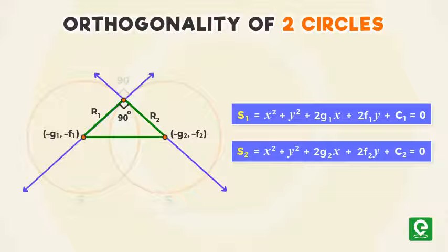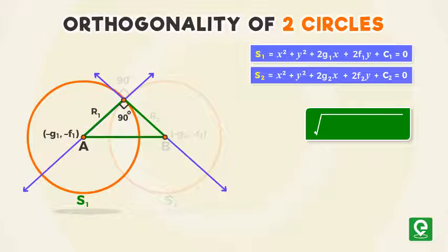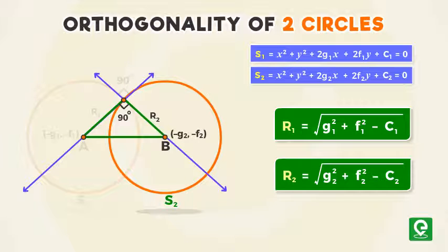Where (-g₁, -f₁) and (-g₂, -f₂) are the respective centers A and B of the circles S₁ and S₂. Also √(g₁² + f₁² - c₁) = r₁ is the radius of circle S₁ and √(g₂² + f₂² - c₂) = r₂ is the radius of circle S₂.